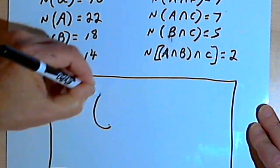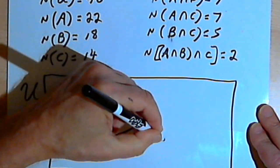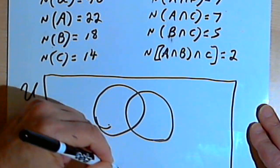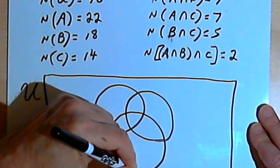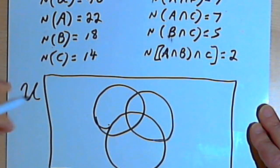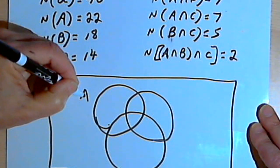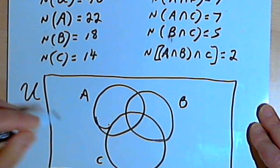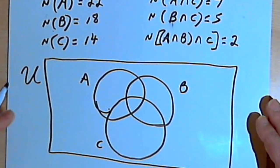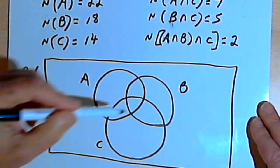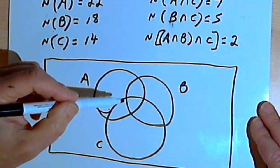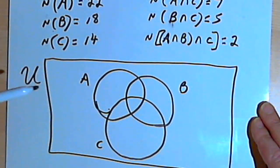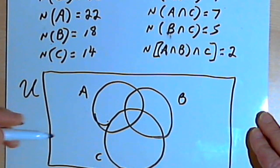I'm going to have three circles: one for set A, one for set B, and one for set C. They all overlap. Usually the easiest thing to do is start with the smallest area, which is that intersection of A and B and C, and we know there are two students in there.